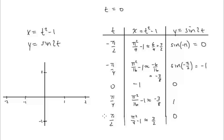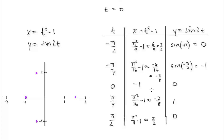With t values at negative pi/2, negative pi/4, 0, pi/4, and pi/2, we compute x equals t squared minus 1. For approximation, pi squared over 4 is approximately 10/4, so 10/4 minus 1 is about 3/2. Similarly, pi squared over 16 minus 1 gives approximately negative 3/8. The y values from sine 2t are straightforward to compute, giving us a set of (x, y) pairs to plot.